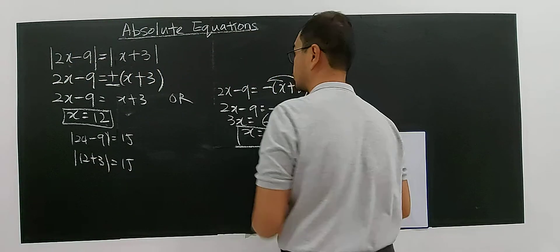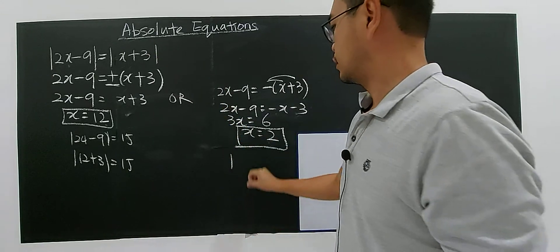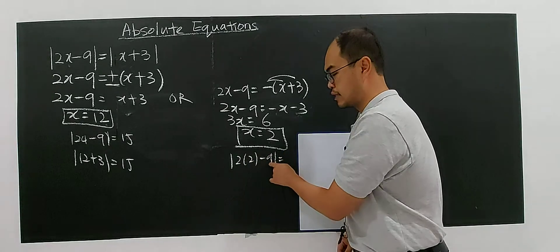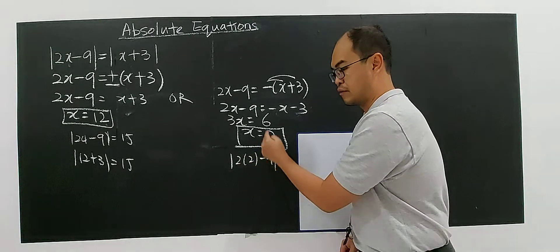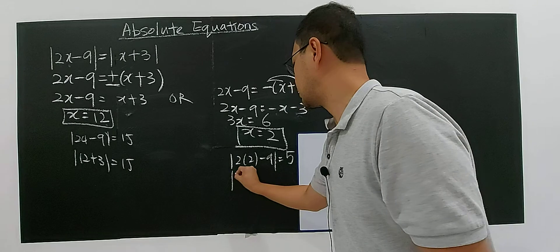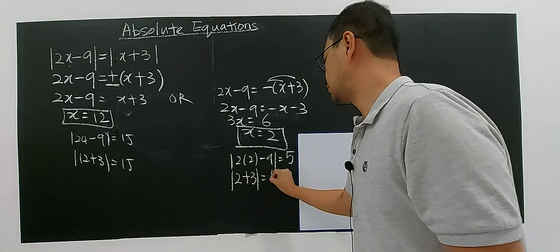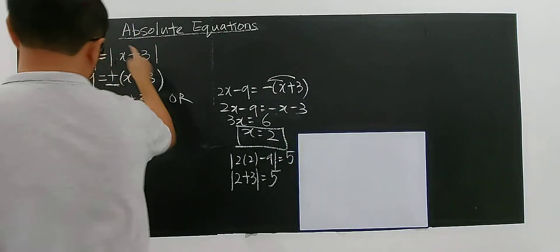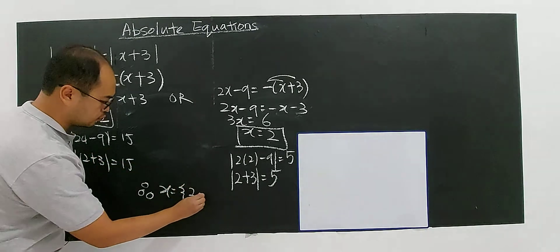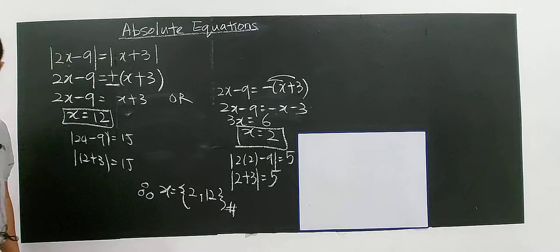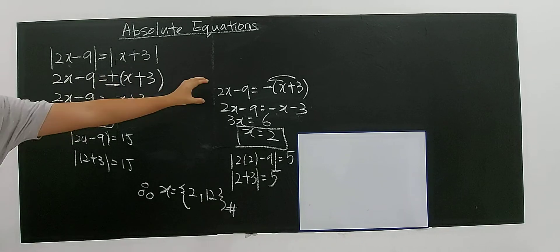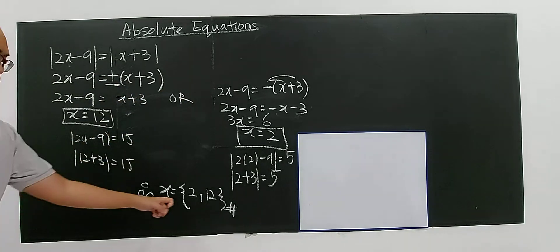For x equals 2: you have 2 times 2 minus 9, which is 4 minus 9, giving negative 5. Modulus of negative 5 gives 5 — that's the left hand side. For the right hand side, x plus 3 is 2 plus 3, you are still getting 5. So this equation has 2 solutions: x equals 2 and x equals 12. If you have modulus on both sides, just put plus or minus on either one side, break it into 2 cases, and you get the solution.